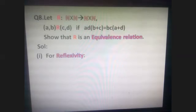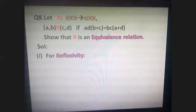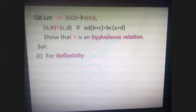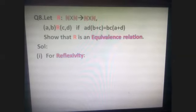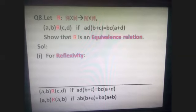This was yesterday's homework question. I said I would take it up again. Let us go for it. (a,b) is related to (c,d); the domain is N×N, so R is from N×N to N×N. (a,b) is related to (c,d) if a·d·(b+c) equals b·c·(a+d), and we need to show R is an equivalence relation.